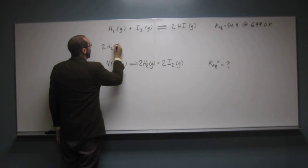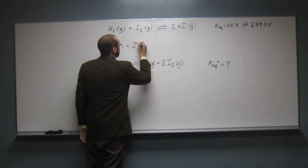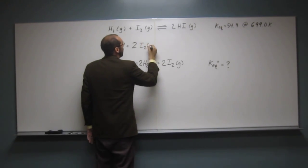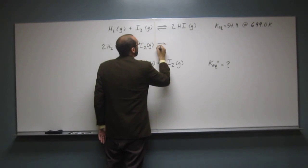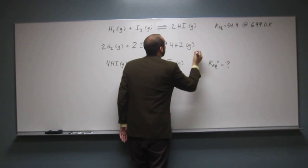2 molecular hydrogen plus 2 molecular iodide goes to 4 hydrogen iodide, like that.